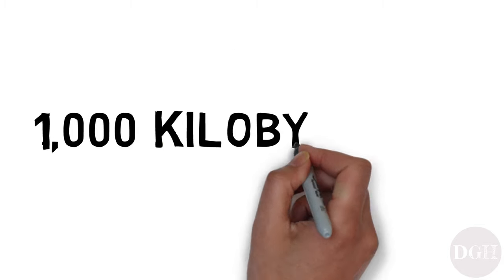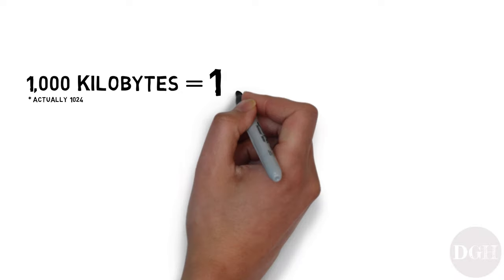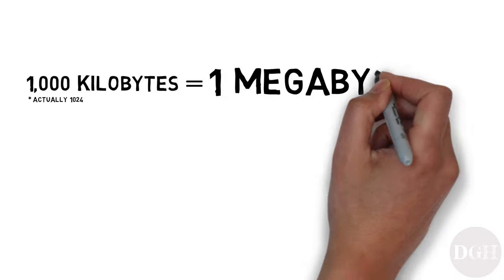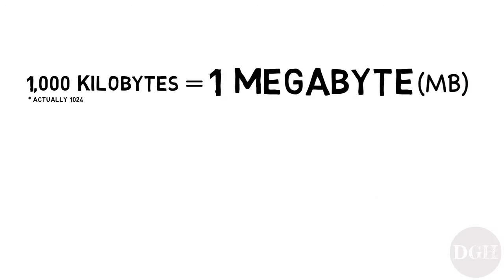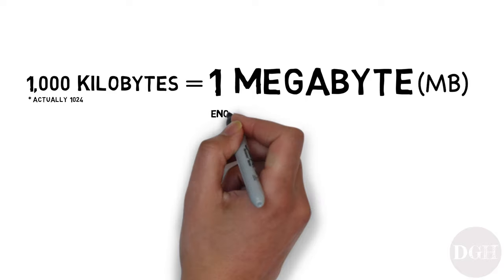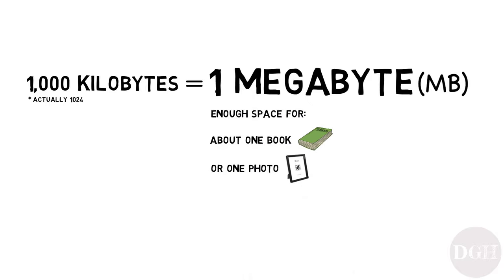A thousand kilobytes is called a megabyte, abbreviated as MB. One megabyte is enough space to hold about one book, one photo, or one minute of music. Keep in mind those are approximations and could vary widely based on the quality and type of encoding.